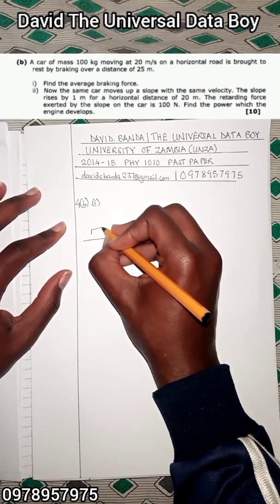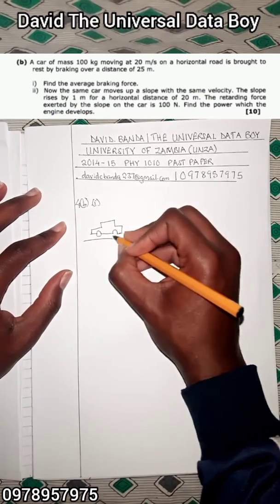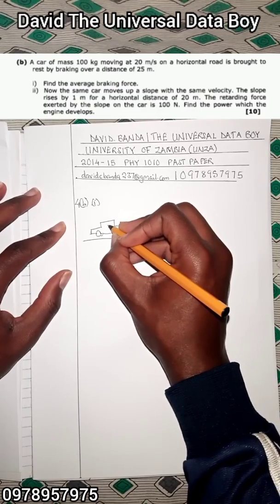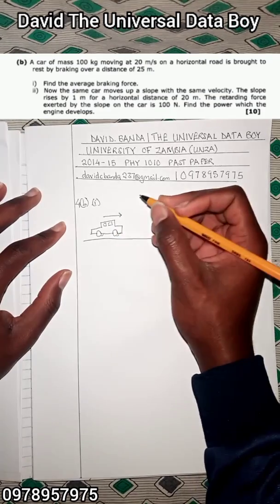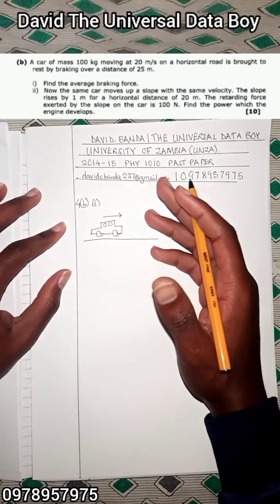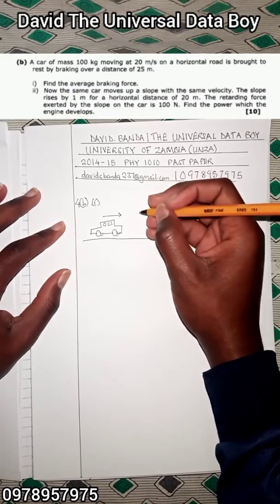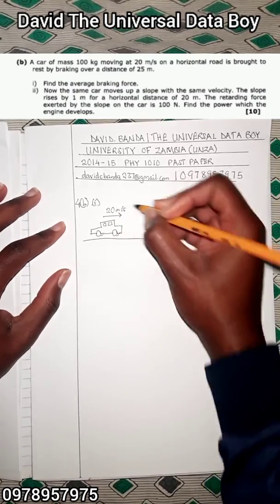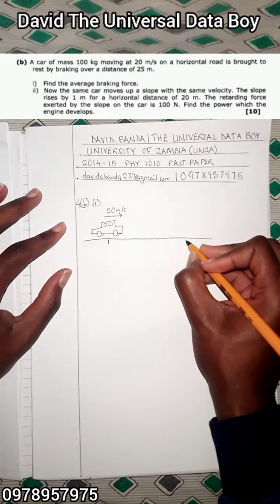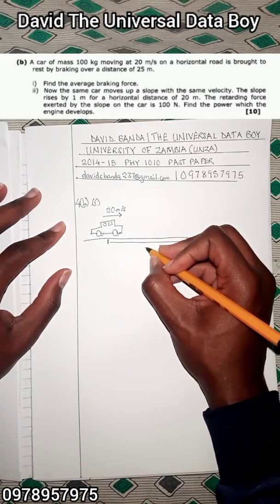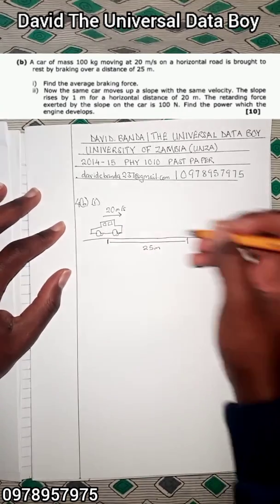As I said, in any physics problem we draw a diagram. We draw a car — a very expensive car. The car is going in this direction; the direction is arbitrary, meaning we can choose either direction and it's still the same thing. This car is moving at 20 meters per second and is meant to brake over a distance. The distance is 25 meters and the car has a mass of 100 kg.